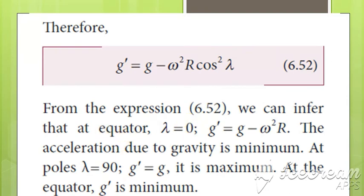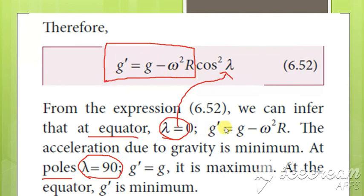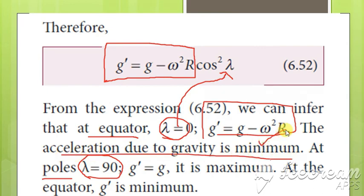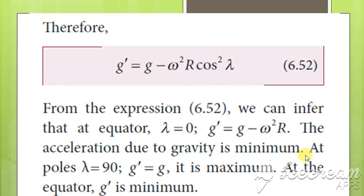Considering two conditions: at the equator, λ = 0, and at the poles, λ = 90. Substituting λ = 0: cos(0) = 1, so G' = G − ω²R, meaning the subtracted term is maximum and hence the acceleration due to gravity G' is minimum at the equator. Substituting λ = 90: cos(90) = 0, so the full centrifugal term becomes 0 and G' = G, which is maximum. Therefore, G' is minimum at the equator and maximum at the poles.